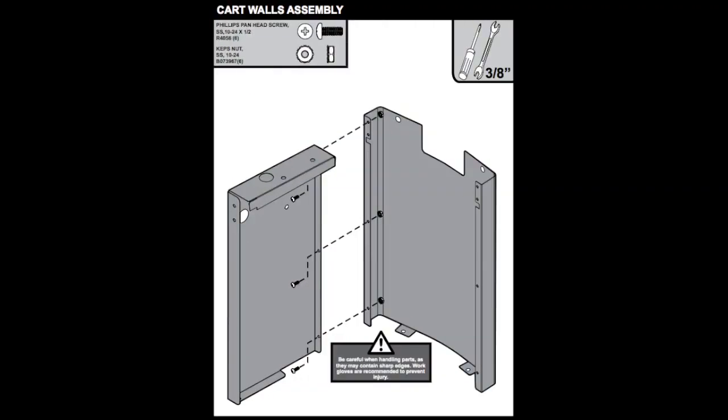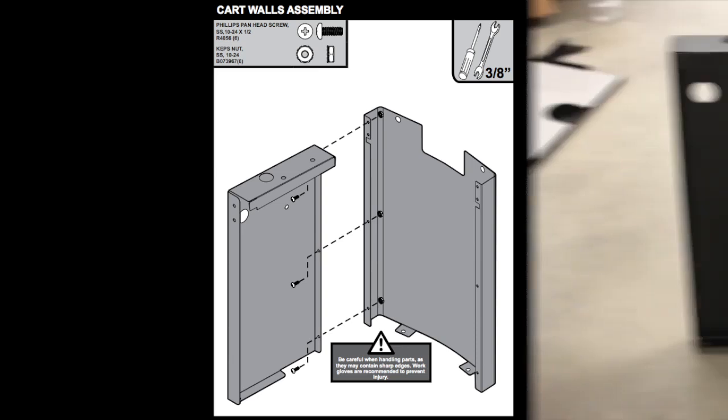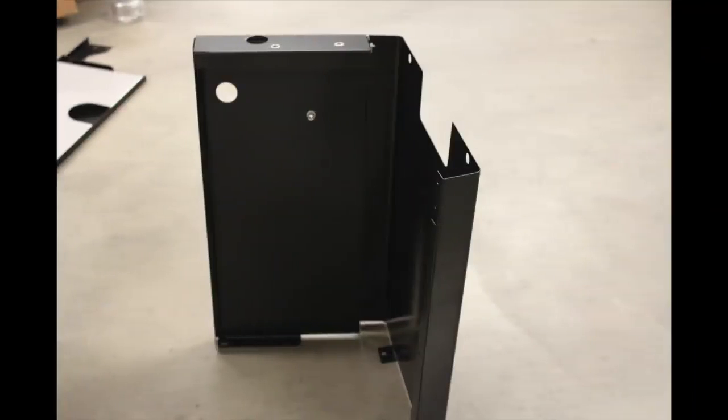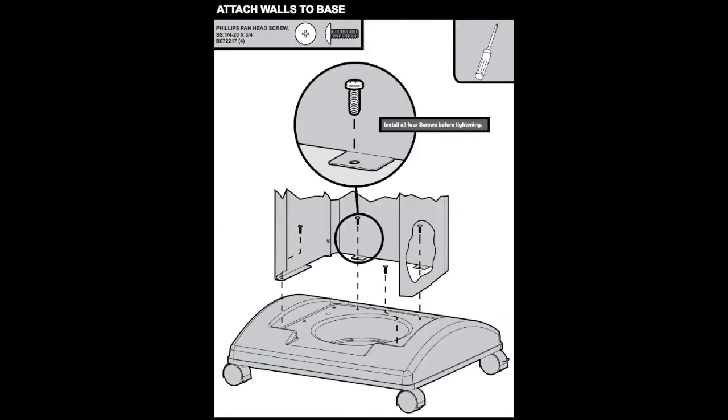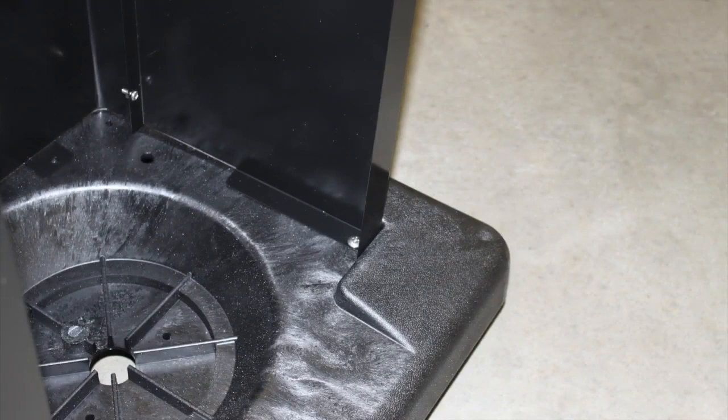Attach the two side walls to the front wall. Leave the screws slightly loose. You will tighten them after the next step. Attach the assembled walls to base, pushing the front panel forward to form a slight curve.